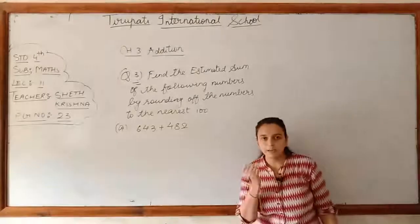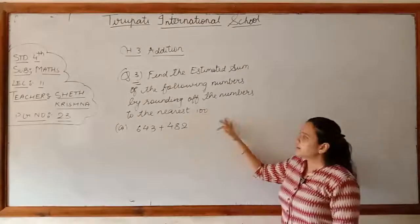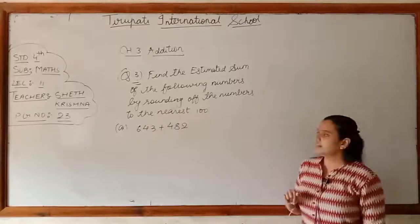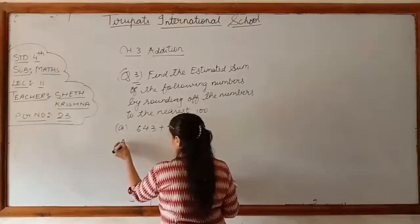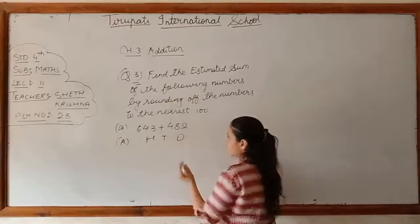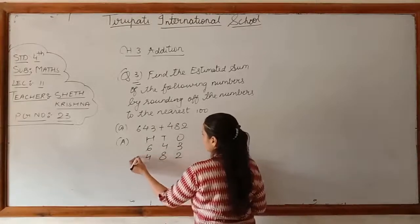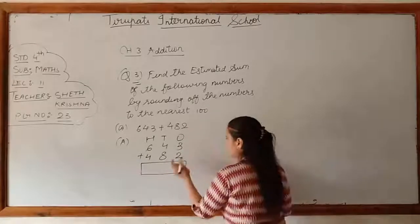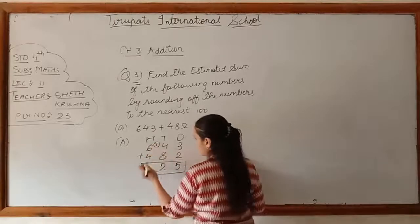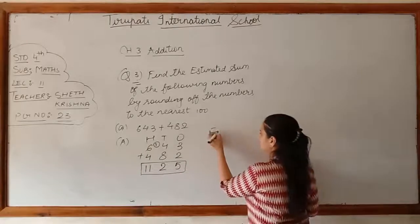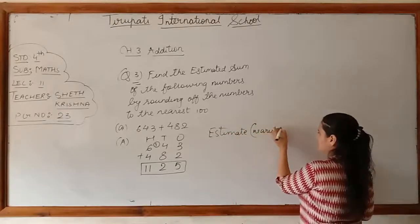In chapter 1 we did rounding to the nearest ten, hundred, and thousand. Here we first do a simple addition of both numbers, then find the nearest hundred estimate of each. Write hundreds, tens, and ones and fill in the digits. Adding: 3+2=5, 4+8=12, 6+4=10, carry gives 11. Simple sum = 1,125.